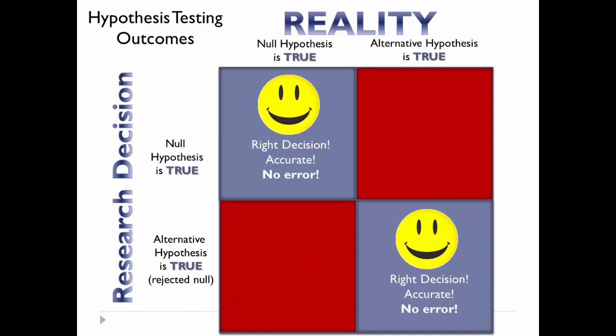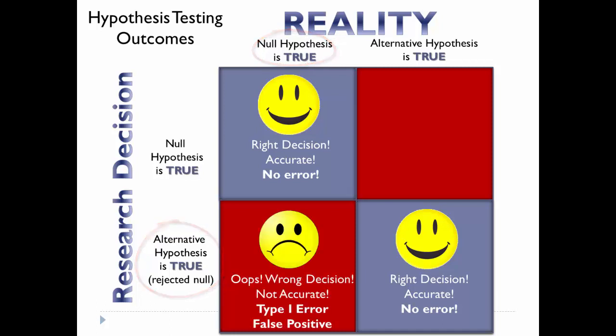Let's assume that the null hypothesis is true, but we rejected it in favor of the alternative hypothesis. In our example, we would conclude that Disney's pricing affected attendance, when in reality it did not. Then we made an error — a false positive — which is a Type 1 error.